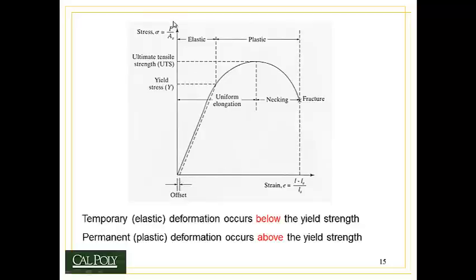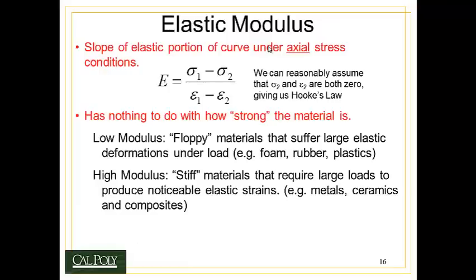In a stress-strain curve, with strain on the x-axis and stress on the y-axis, the stress-strain curve follows a linear relationship at first — that's Hooke's Law. But then eventually, at the yield stress, it begins to go nonlinear. When it's nonlinear, we have plastic deformation. When it's linear, we have elastic deformation. So Hooke's Law applies to the elastic deformation, but Hooke's Law does not apply to the plastic deformation, and that's important to keep in mind.